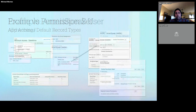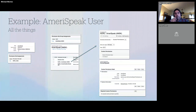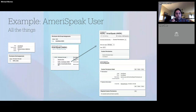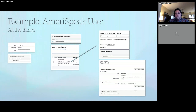Here's a deeper dive on the Amerispeak user. On the left column we have the minimum access profile and the NORC Base permission set. In the center column we've added a permission set group called Amerispeak, which contains: a 'Hierarchy View' permission set from an installed package, the NORC Amerispeak permission set we created for additional field access, and the Project Number Requester permission set specific to Amerispeak. Within the Amerispeak permission set, we've also included a custom permission called 'Amerispeak.'